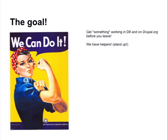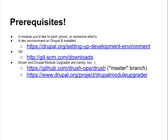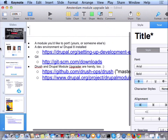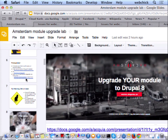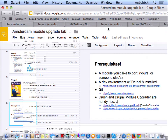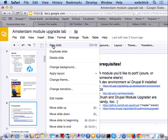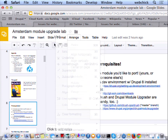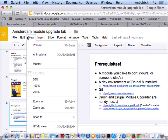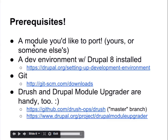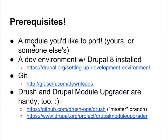The goal is to get something working in Drupal 8 and on Drupal.org before you leave. So prerequisites: a module to port, either yourself or someone else's; a development environment with Drupal 8 installed; Git; and Drush and Drupal Module Upgrader are also handy. If you've been using Drush, note that you need the Drush 7 version for Drupal 8, because we love to confuse the crap out of people. Drush 7 is the master branch of Drush, so you'll need that.